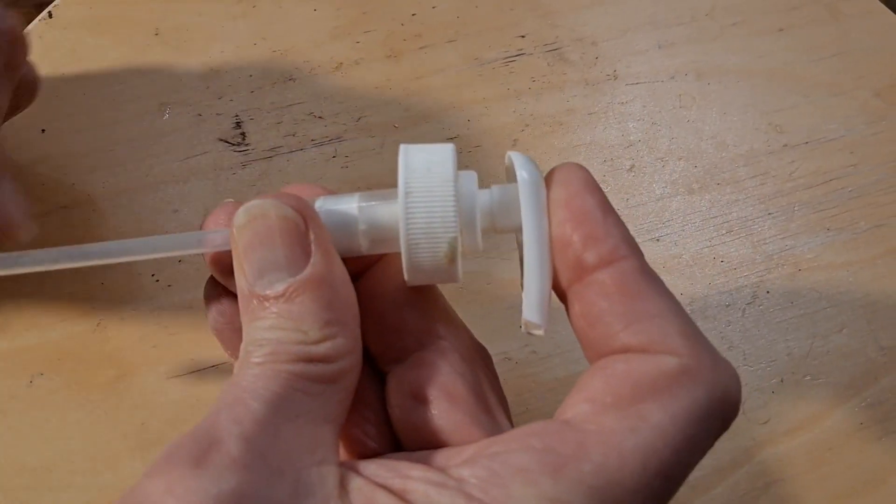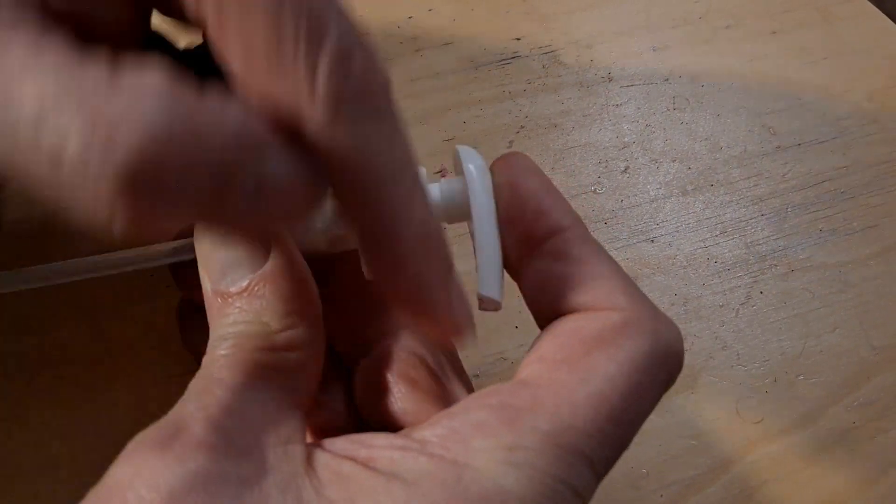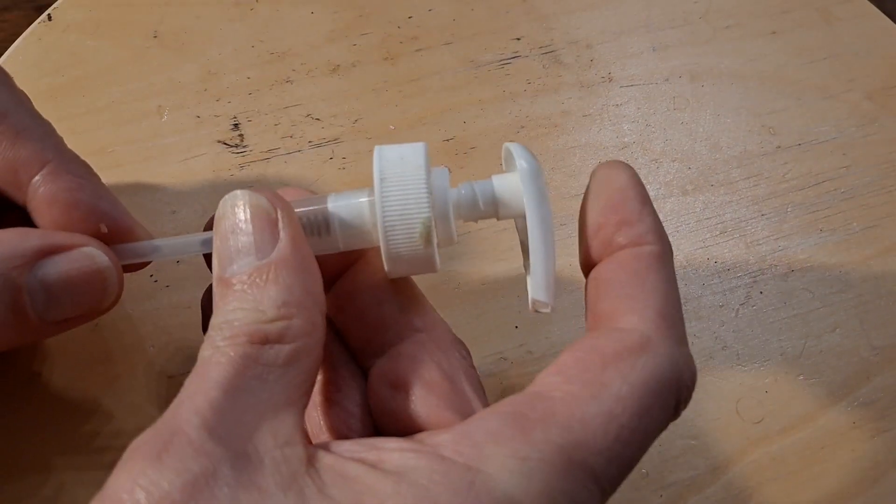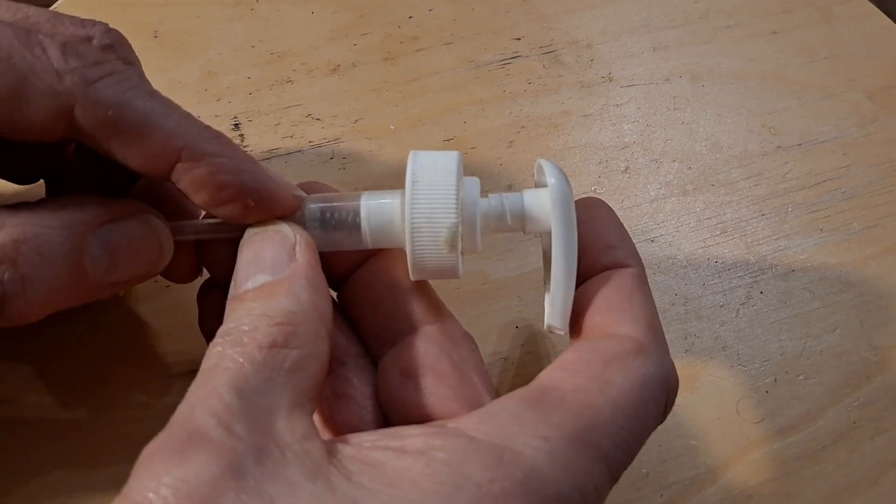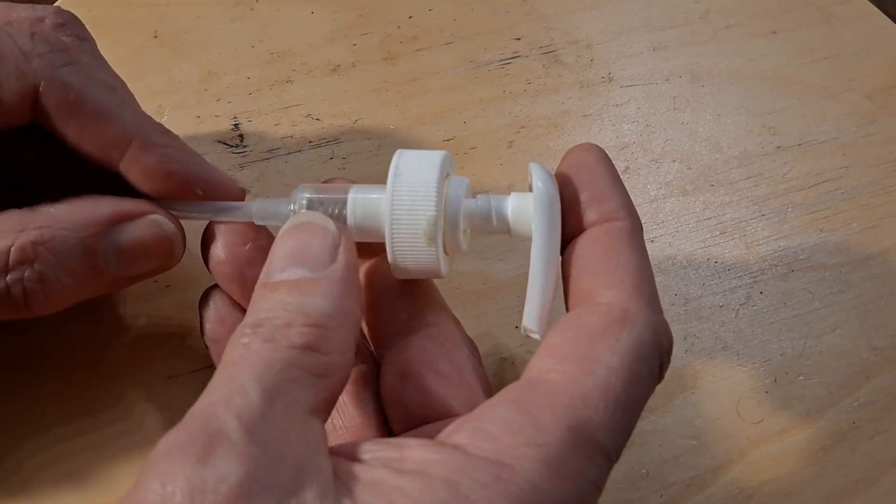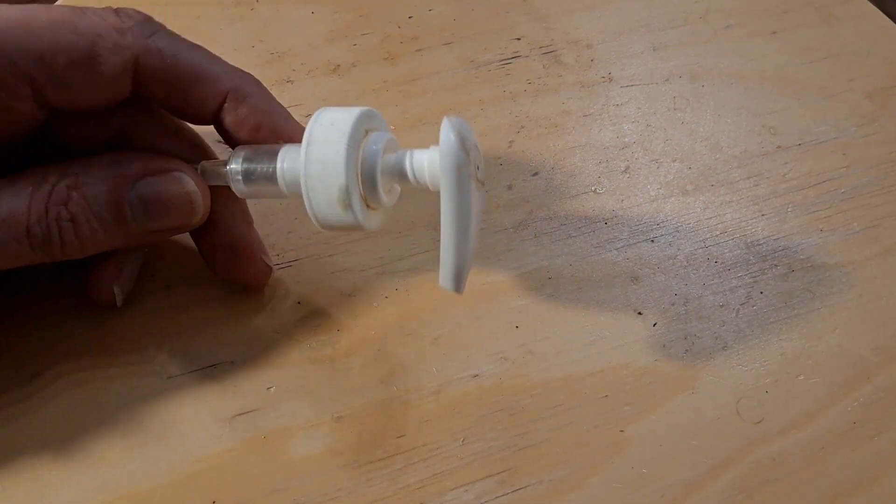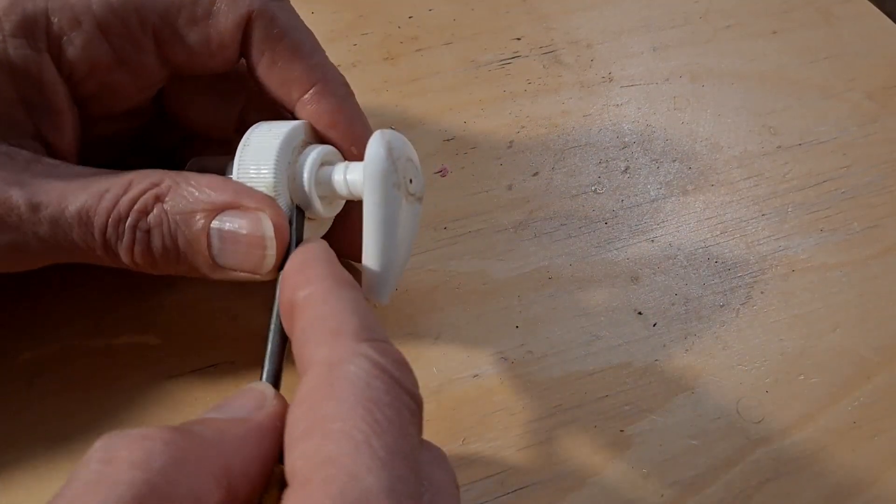Push it down. The air can't go down there because the ball is in the way. So the air comes out there. Release it. The air is sucked up there because the valve releases. Let's take it apart, then you can probably see better what I mean.